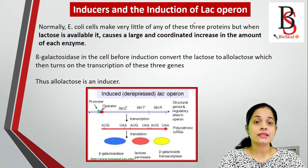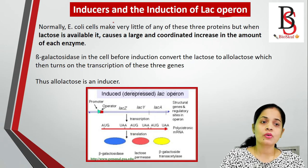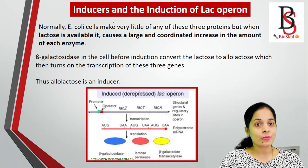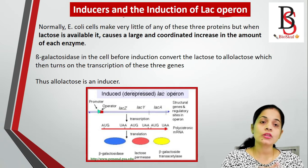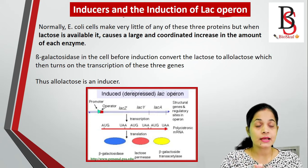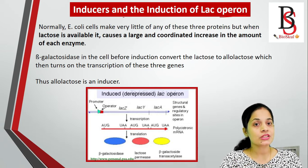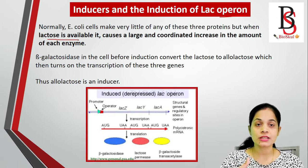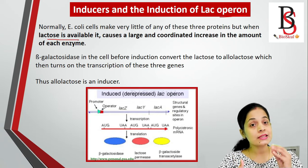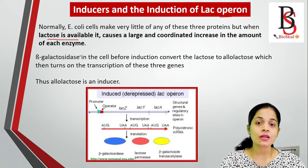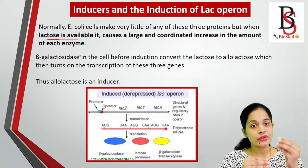The lac operon is known as an inducible operon. E. coli always makes a very small amount of beta-galactosidase, permease, and transacetylase, but the synthesis of these proteins is greatly enhanced in the presence of a molecule known as lactose. When lactose is available in the media, the synthesis of these three proteins is enhanced; otherwise they are present at only very low concentrations.